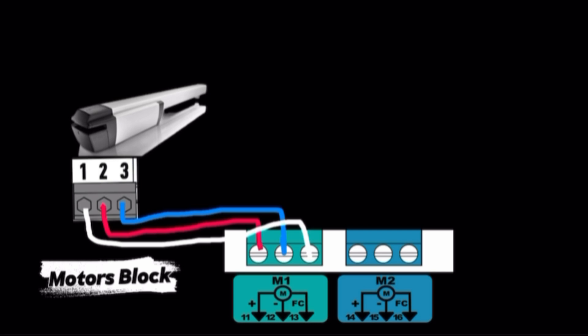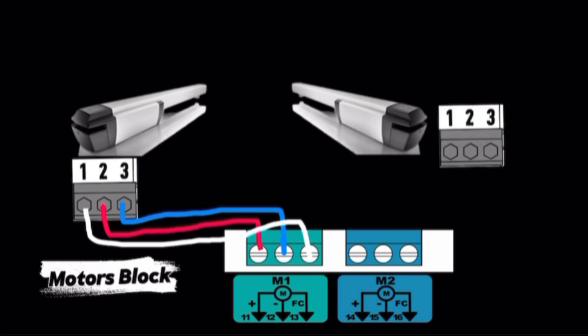Connect M2. Terminal 14 is DC positive wire of power supply. Terminal 15 is DC negative wire of power supply. Terminal 16 is end limit wire only for Xingo motor only.